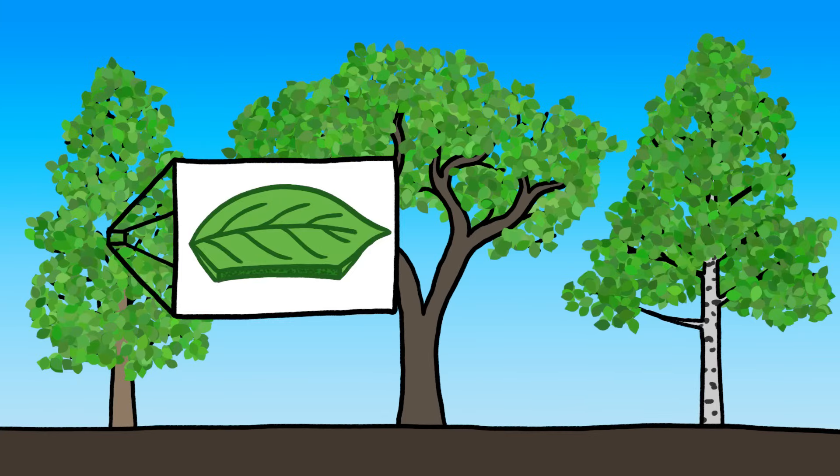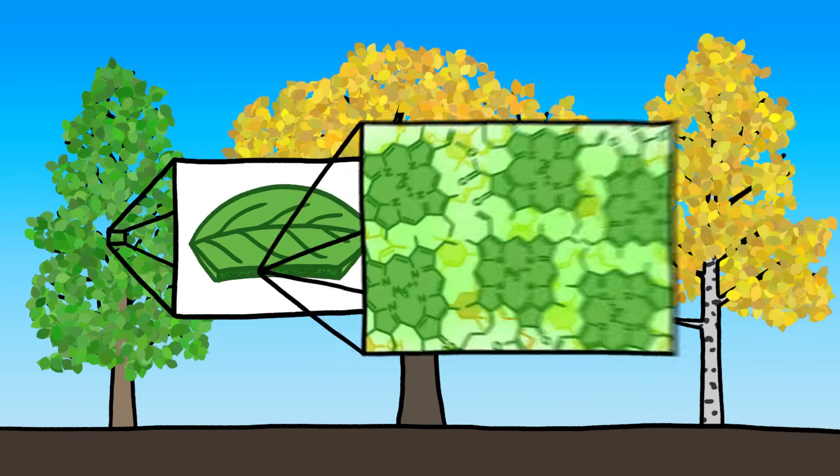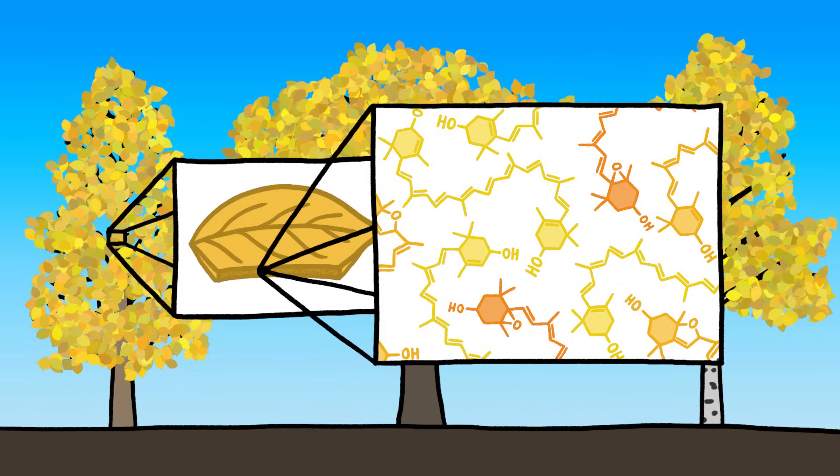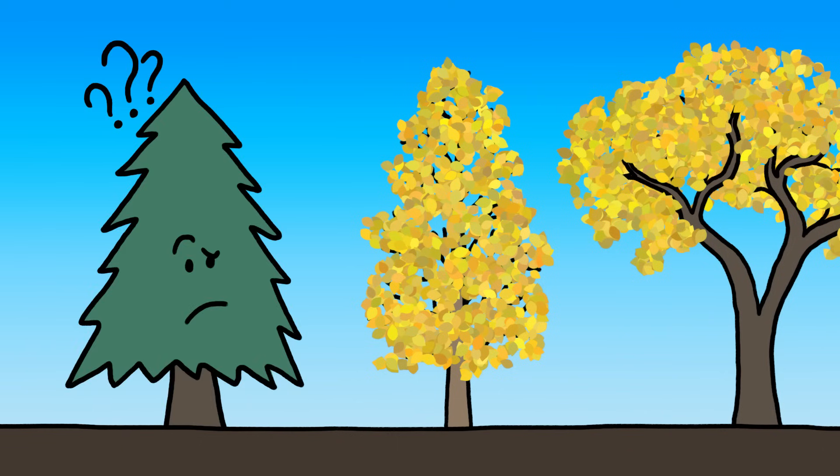You've probably heard that leaves of deciduous trees change color in autumn because they lose their green chlorophyll molecules, allowing the underlying yellow and orange pigments to shine through. However, this doesn't explain why the leaves change color in the first place.